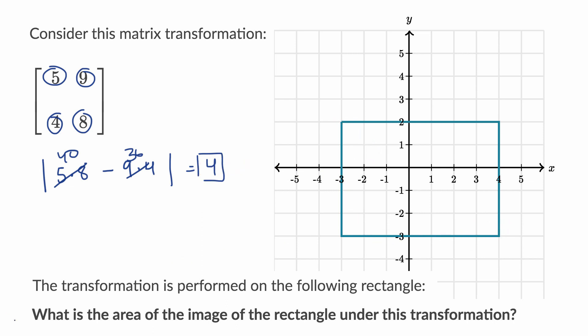So what's the area before the transformation? Well, we can see that this is five units tall and it is seven units wide. So this has an area of 35 square units pre-transformation.